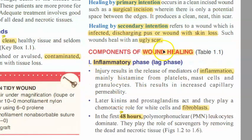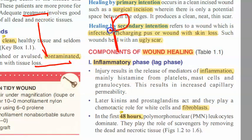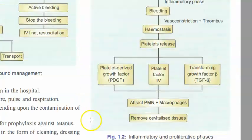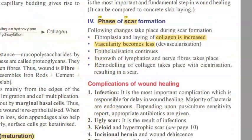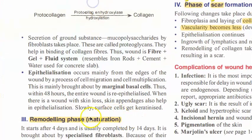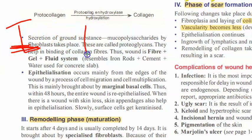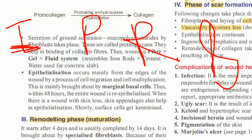What are the components of wound healing? Basically you have four things: you have the inflammatory phase, then you have the proliferative phase, then you have the remodeling or maturation phase, and finally you have the phase of scar formation. So the four things to remember are: inflammatory, proliferative, remodeling, and phase of scar formation.